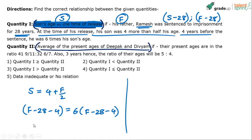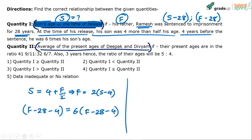So these are the 2 equations. We have to solve for the son's age, S. From the first equation, F equals 2 times (S minus 4), which gives F = 2S minus 8. Now substitute that into the second equation.